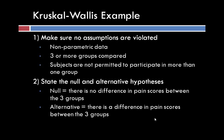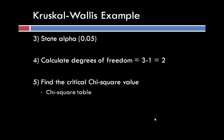We are calculating the degrees of freedom for our three different treatment groups: the placebo group, the 10 mg group, and the 20 mg group. So three treatment groups minus one equals two degrees of freedom. And we want to find our critical chi-square value.